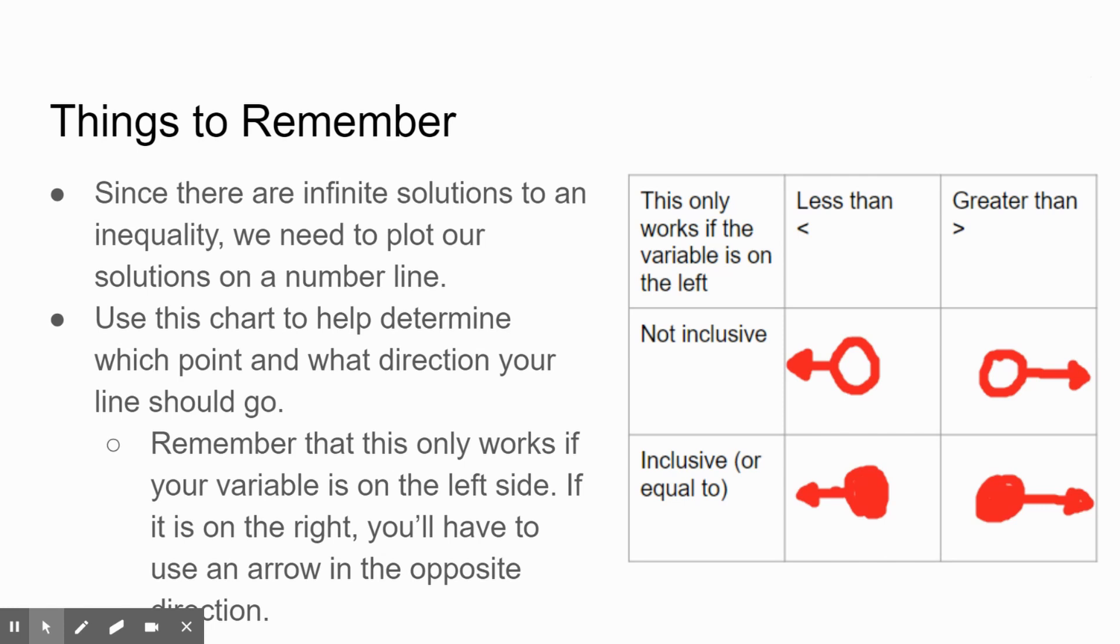So things to remember: since there are an infinite number of solutions to an inequality, we need to be able to plot our solutions on a number line. That way it shows all of the possibilities. The chart there is going to help you do so—it'll help you with which point you should use and what direction your line should go. If you didn't write it down when we did it initially, I would pause the video now and write it down. However, remember that this only works if your variable's on the left side. If it's on the right, you'll just have to use the arrow that goes in the opposite direction. That's all that you need to do.